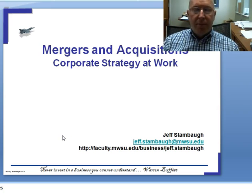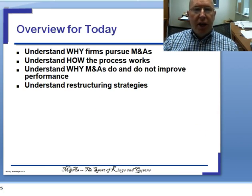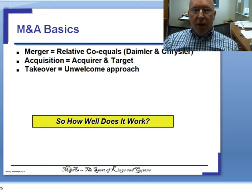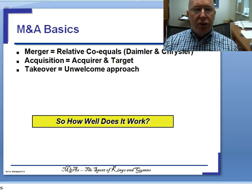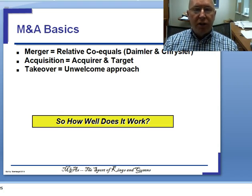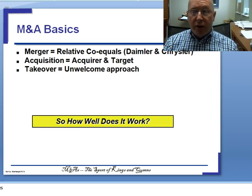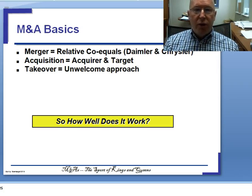Now we're on to Chapter 7: mergers and acquisitions, or what I call corporate strategy at work. A merger is where companies come together on a relatively co-equal basis. I gave you the example of Daimler and Chrysler, which is a great example of how there are very few true mergers. A merger implies co-equal status, and that's just not the way it typically happens.